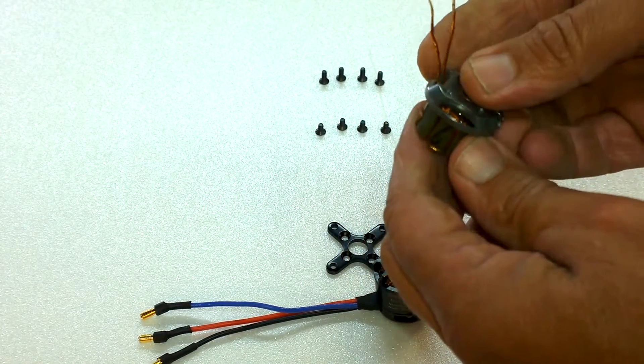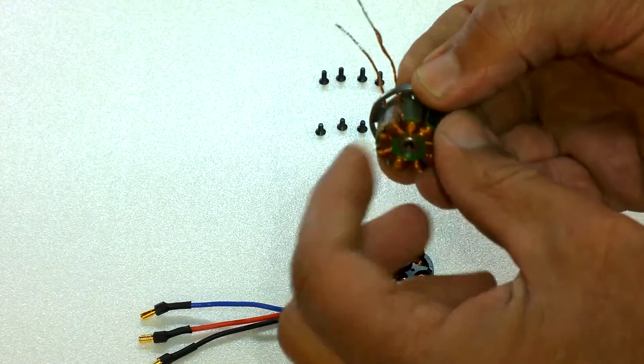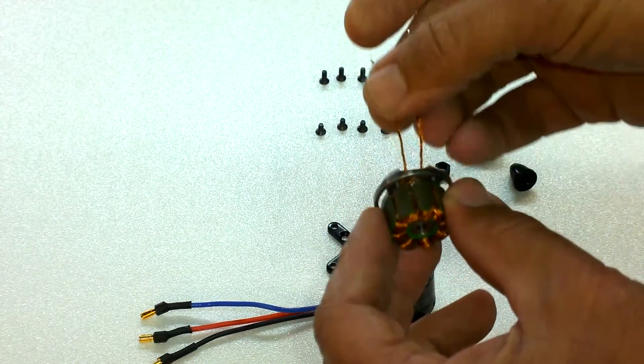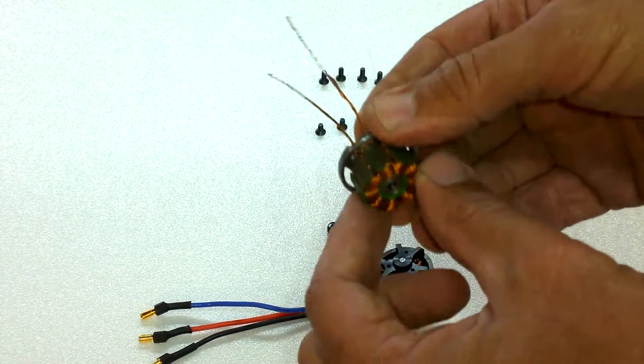It's just that this has been cheaply made because what they've done here is use the winding wire for the outlet leads. So simply when they finish the windings, they've taken the leads out and put a bit of heat shrink on there.